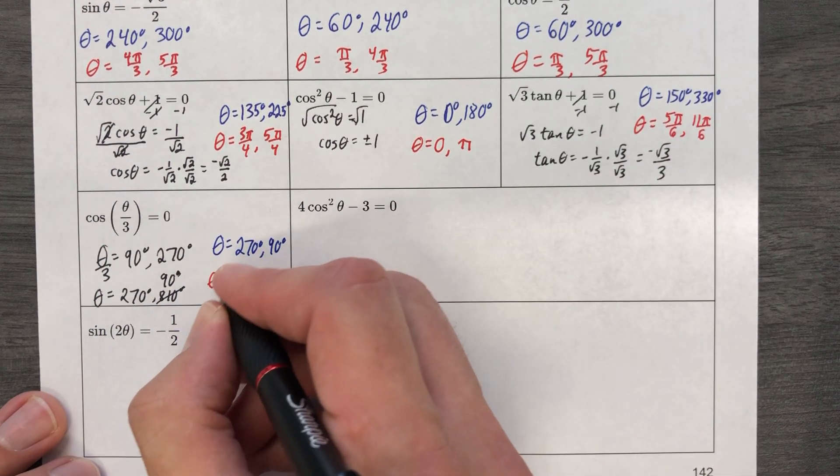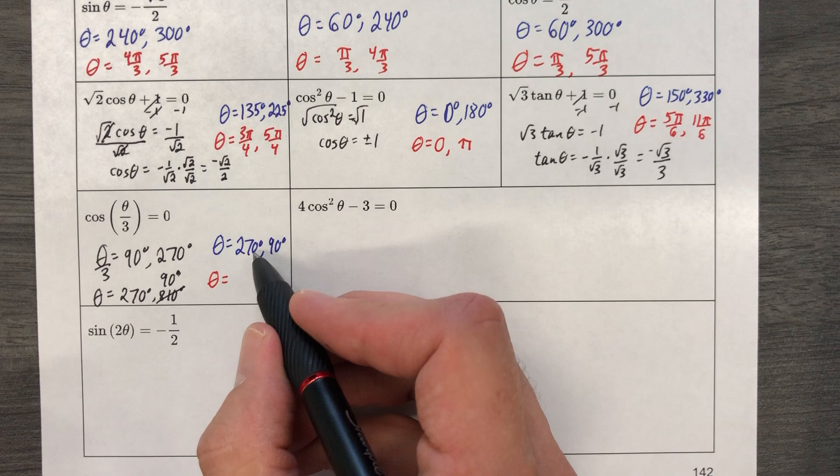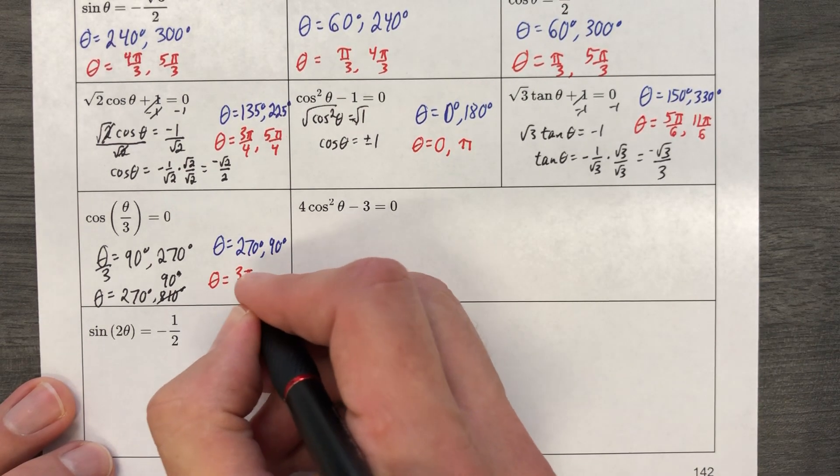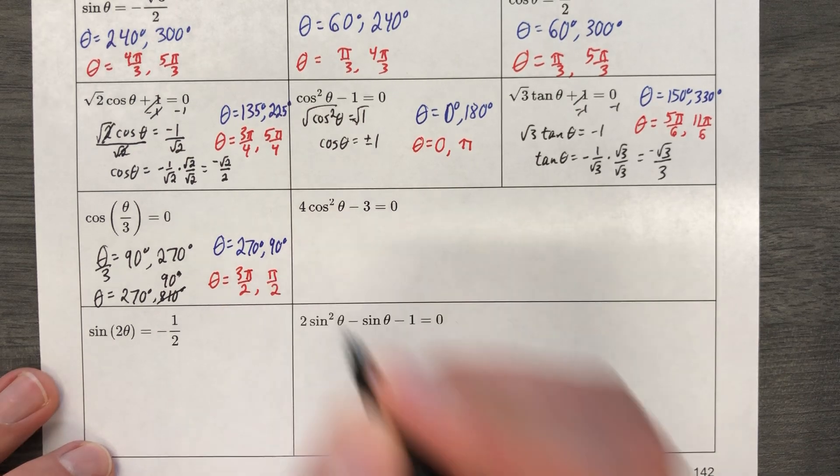But now I'm also going to do the same thing for radians. 270 degrees in terms of radians is 3 pi over 2, and then 90 degrees would be pi over 2.